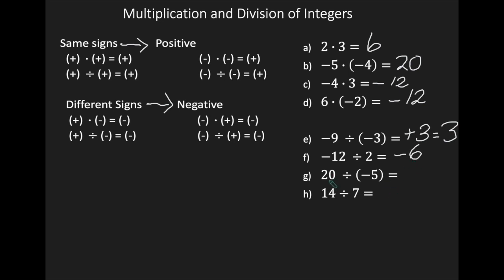We have 20 divided by negative 5. Your signs are different, resulting in a negative, and 20 divided by 5 is 4, so the answer is negative 4. And the last one: 14 divided by 7. The signs are the same — they're both positive — so your answer will be positive, and 14 divided by 7 is 2.